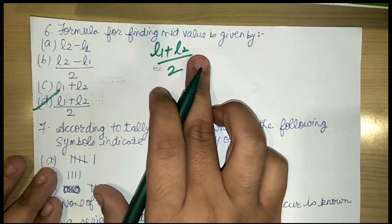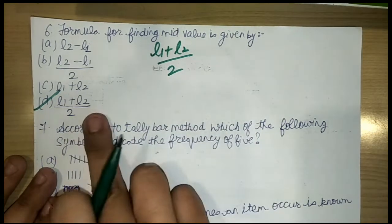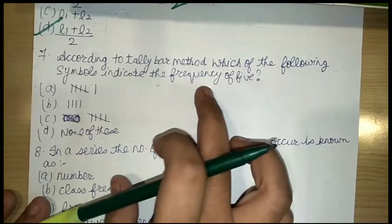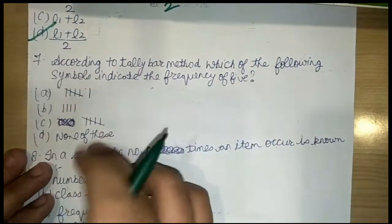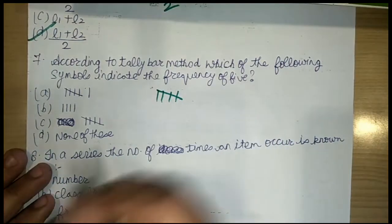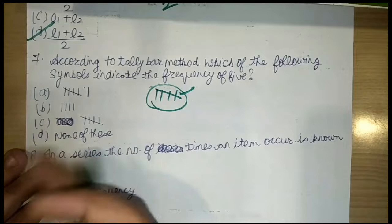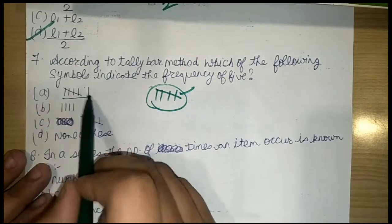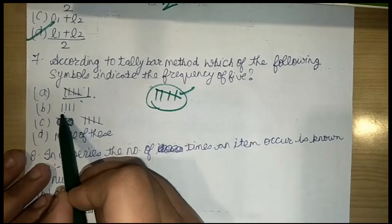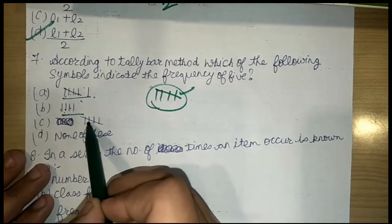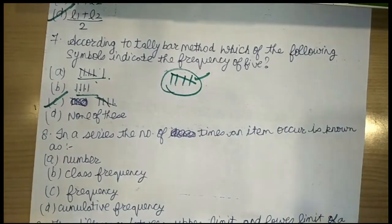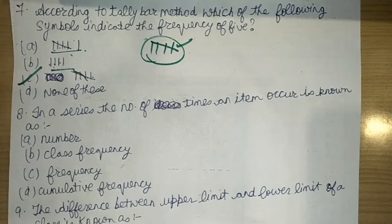The next question is: according to the tally bar method, which of the following symbols indicates a frequency of 5? In the tally bar method, we make marks: one, two, three, four, and the fifth is a cross mark. One option shows frequency 6 (six marks), another shows frequency 4 (four marks), and option C shows frequency 5 — so option C is correct.